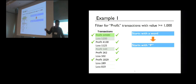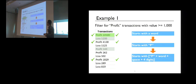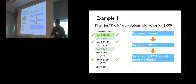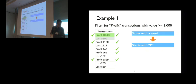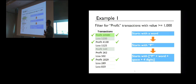The user gives this third example to the system. This time the system learns the correct program, which looks for strings that start with the constant P followed by a word, a space, and four digits. Our system can take both positive and negative examples and learn a program that is consistent with all examples.